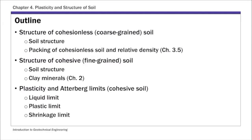The first type is called cohesionless soil, which basically includes gravel, sand, and silt. The second type of soil is cohesive soil, and that refers to clays specifically. We are going to look at the structure of cohesionless and cohesive soils separately.